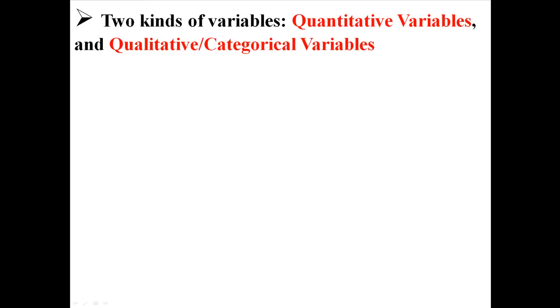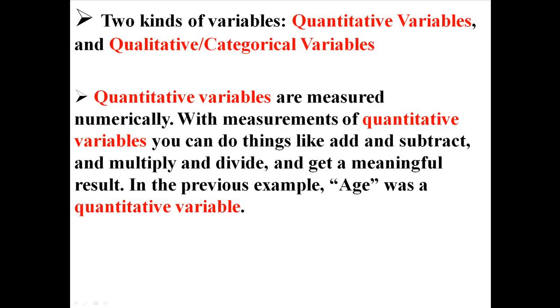Once you get into variables, we can classify them into two major things: quantitative variables and qualitative variables, which are also called categorical variables. Quantitative variables are measured numerically. With measures of quantitative variables, you can do things like add, subtract, multiply, and divide and get a meaningful result. In the previous example, age was a quantitative variable — if someone is 22 and someone is 19, the person who is 22 is three years older, and that difference is meaningful.